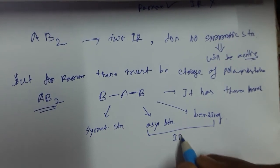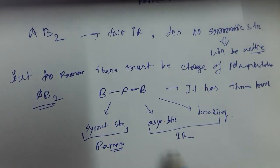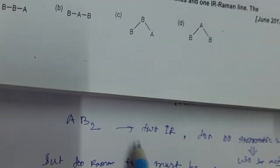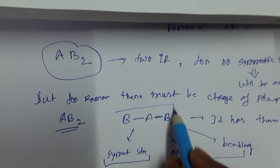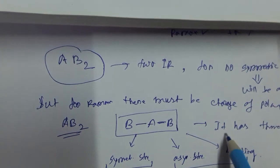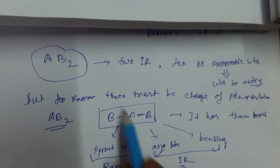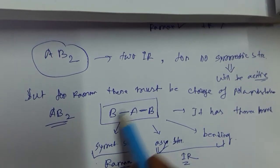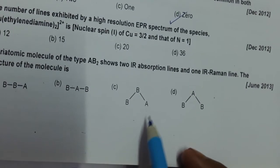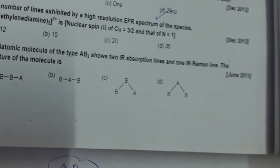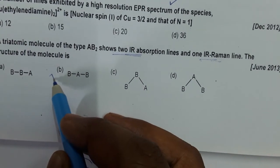The asymmetric stretching and bending modes are IR active, and the symmetric stretching mode is Raman active. So for an AB2 type molecule showing two IR bands and one Raman band, the structure of the molecule must be BAB.